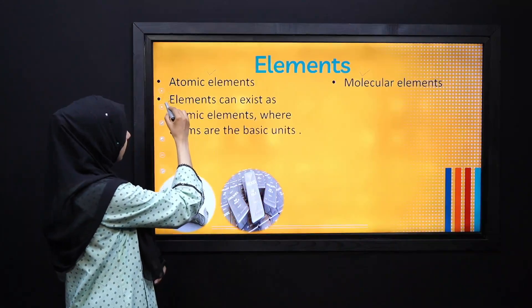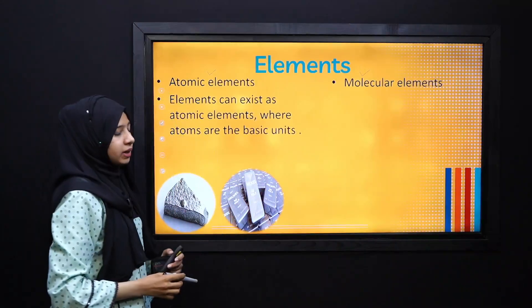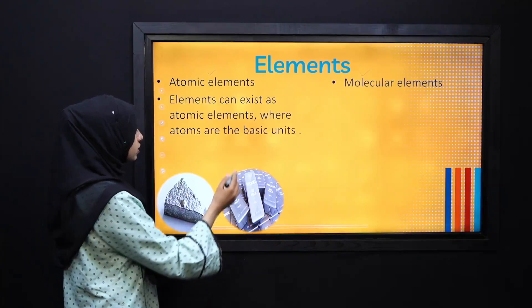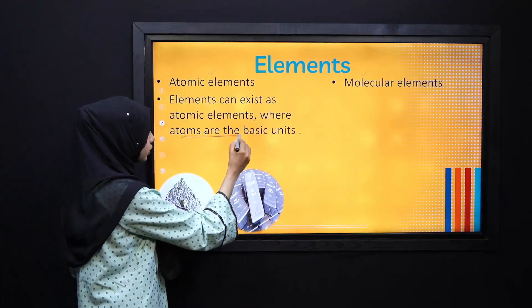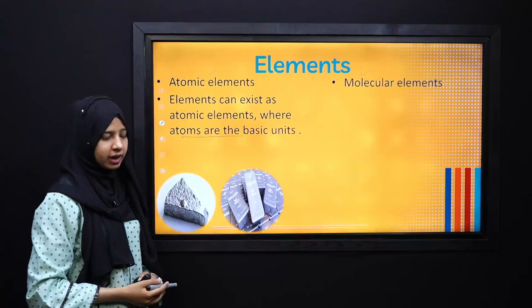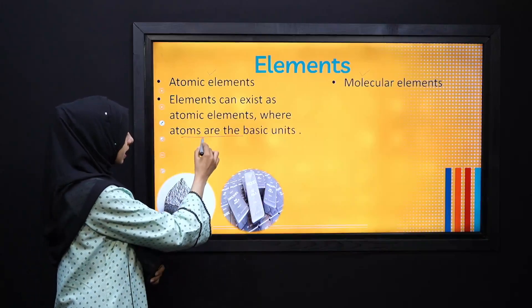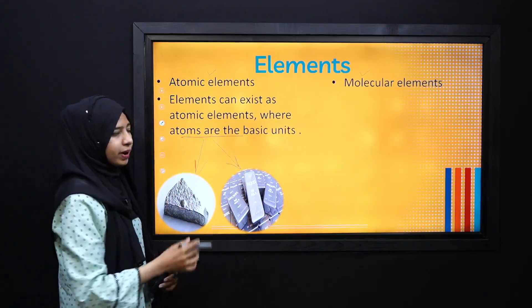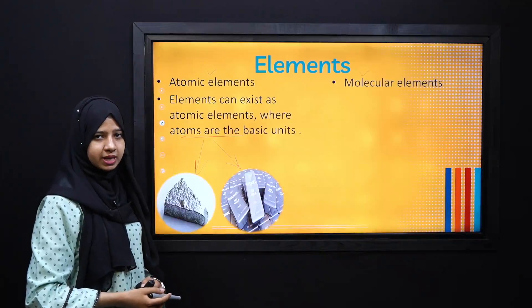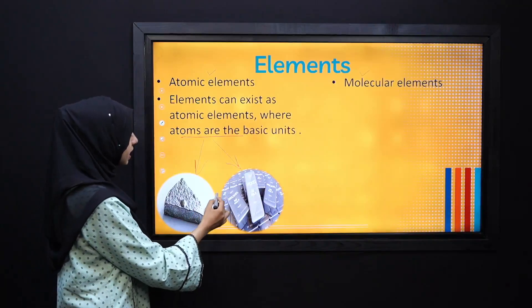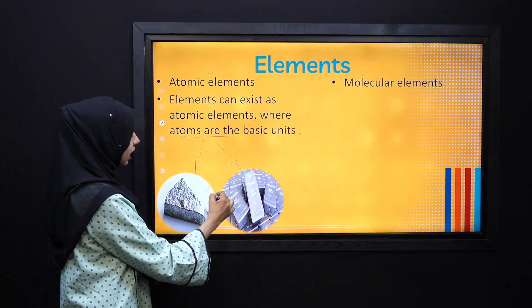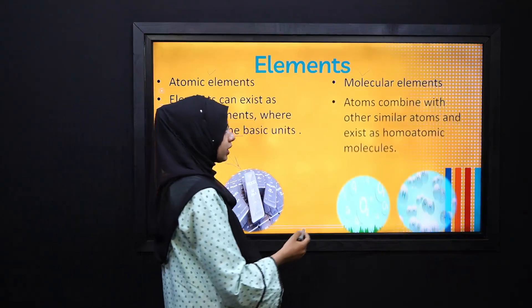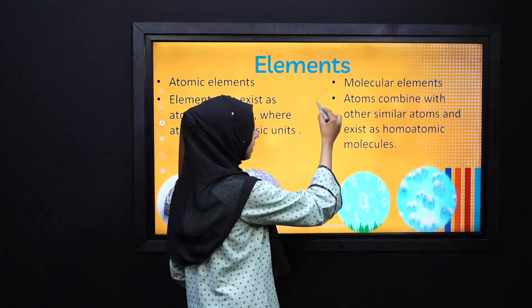If we talk about atomic elements, these are elements whose basic units are individual atoms — not combined with other atoms. We call these atomic elements. For example, we have silver or iron.